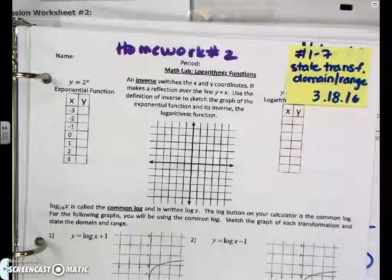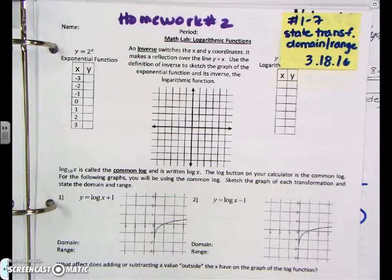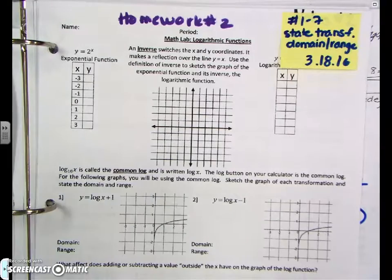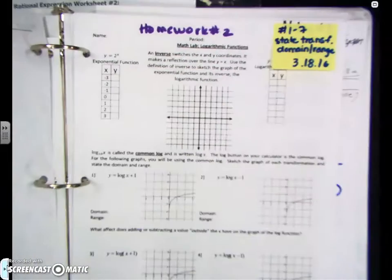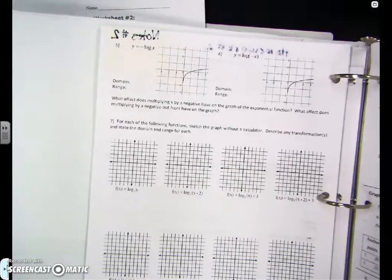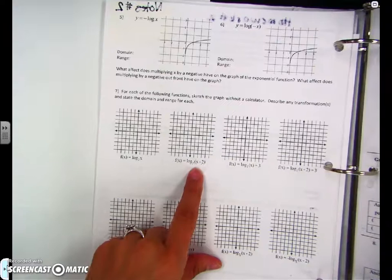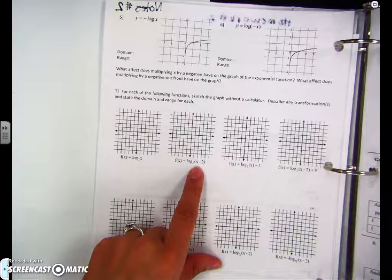You turn to the next page. The next assignment is homework number two. You needed to state the transformations, the domain and range. In class we took notes on the front page, and you were responsible for doing the back page. For each of these problems, you have to explain what the transformation is and what the domain and range is.